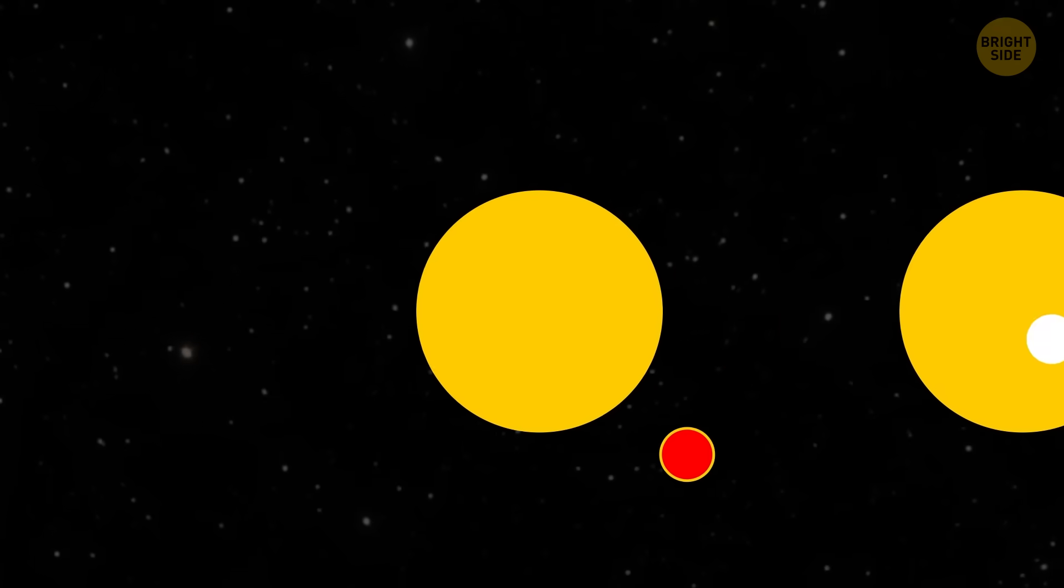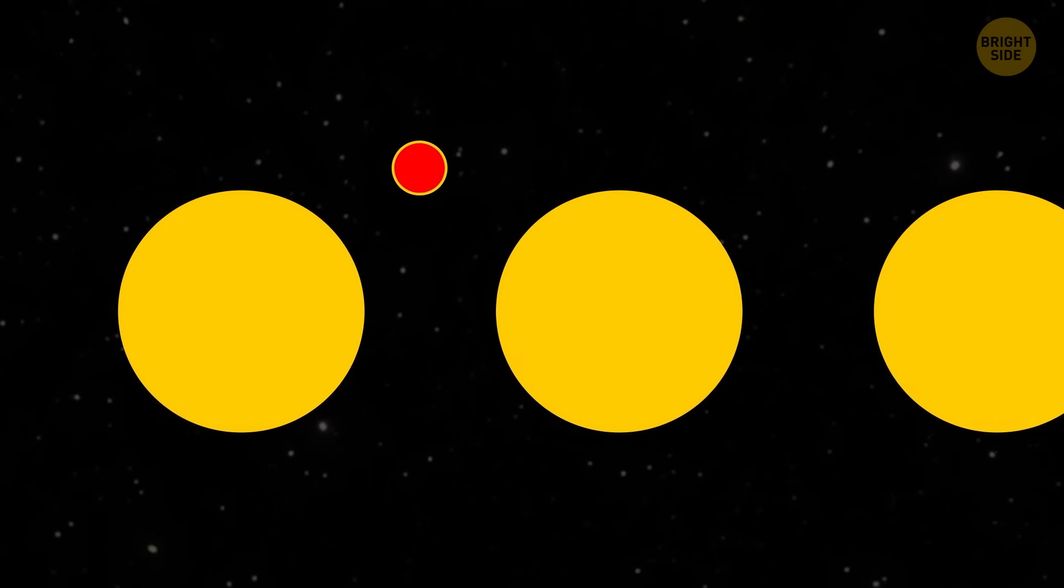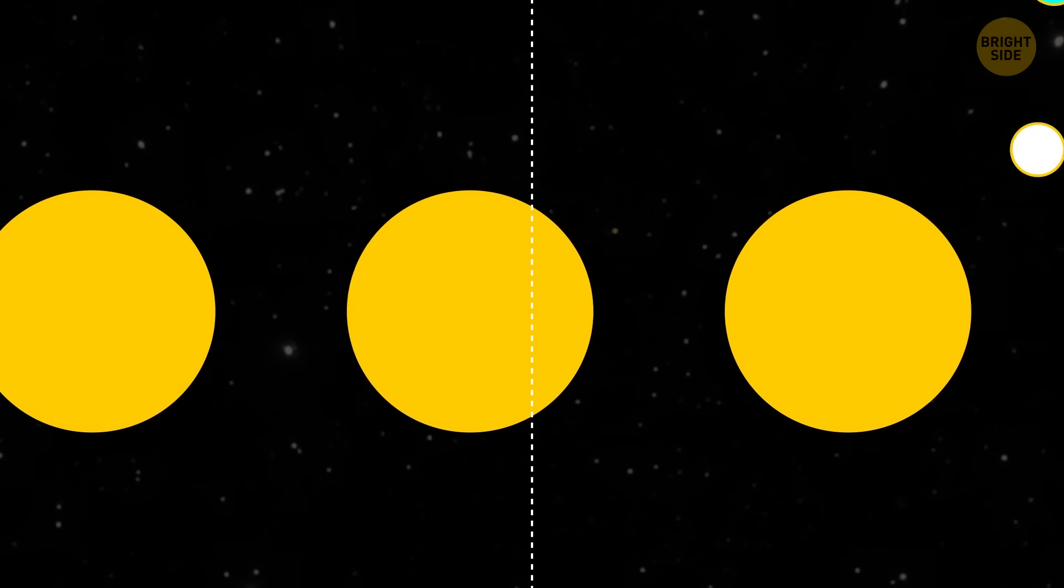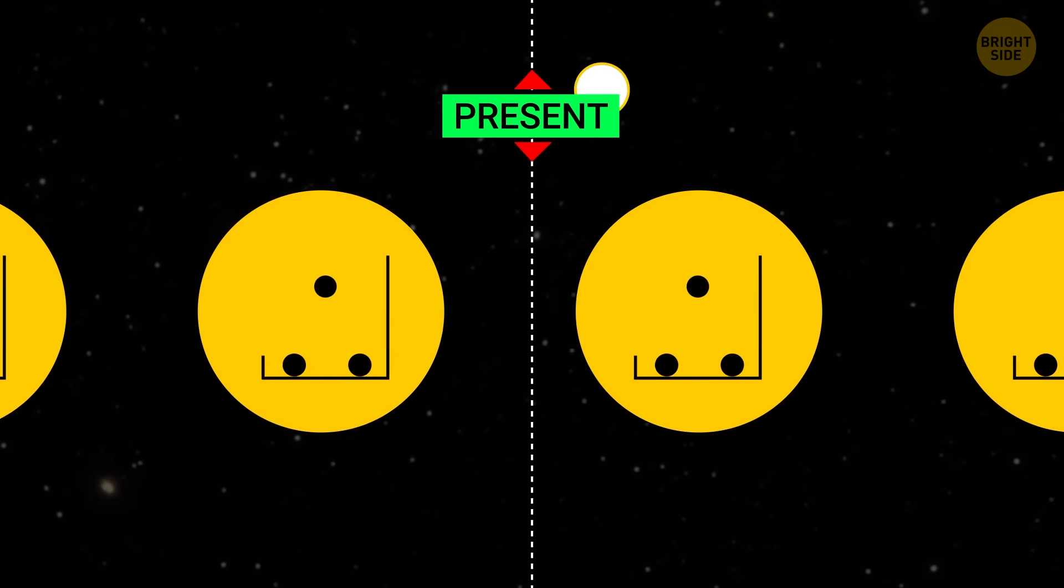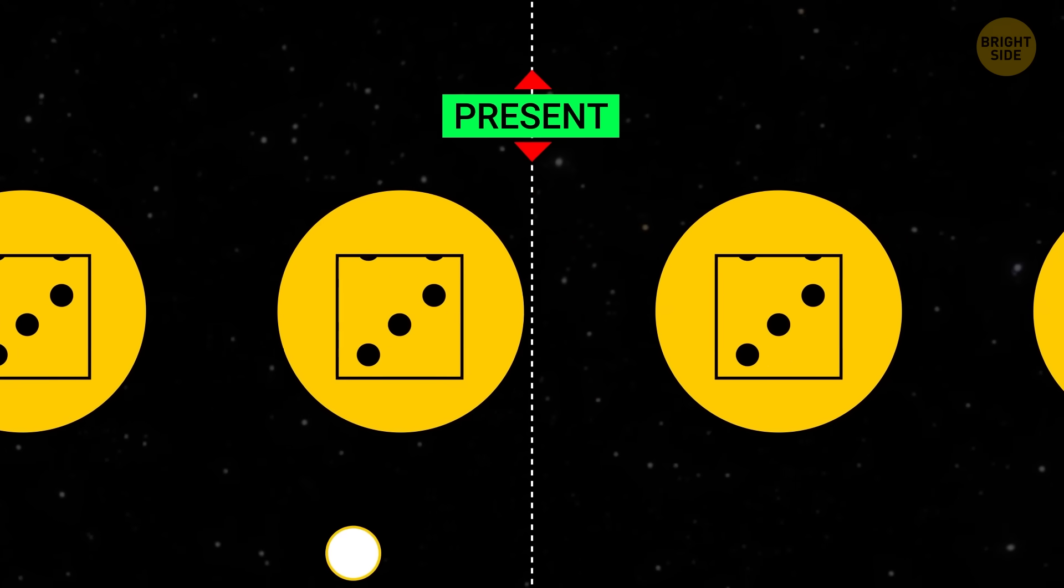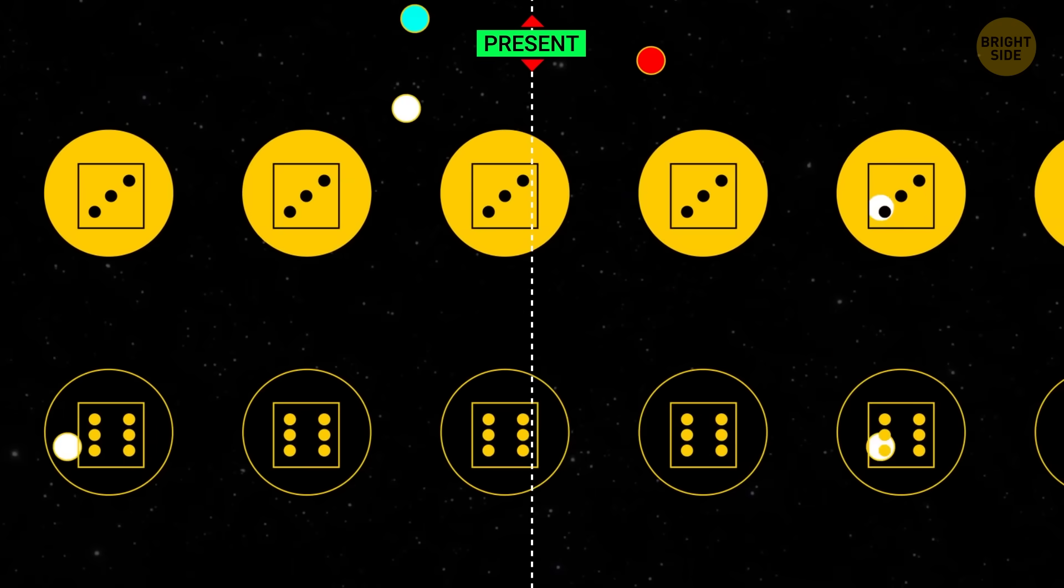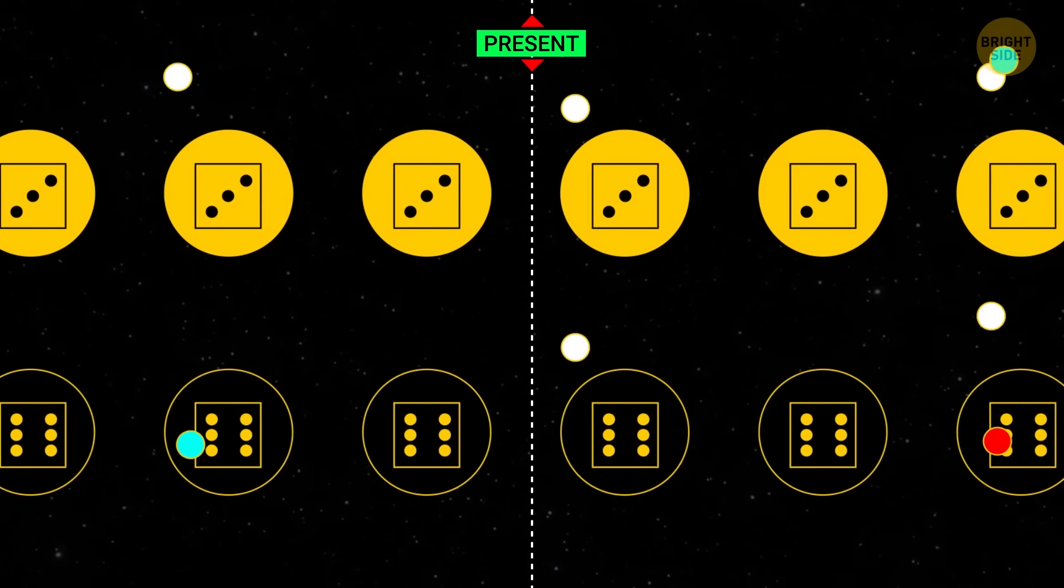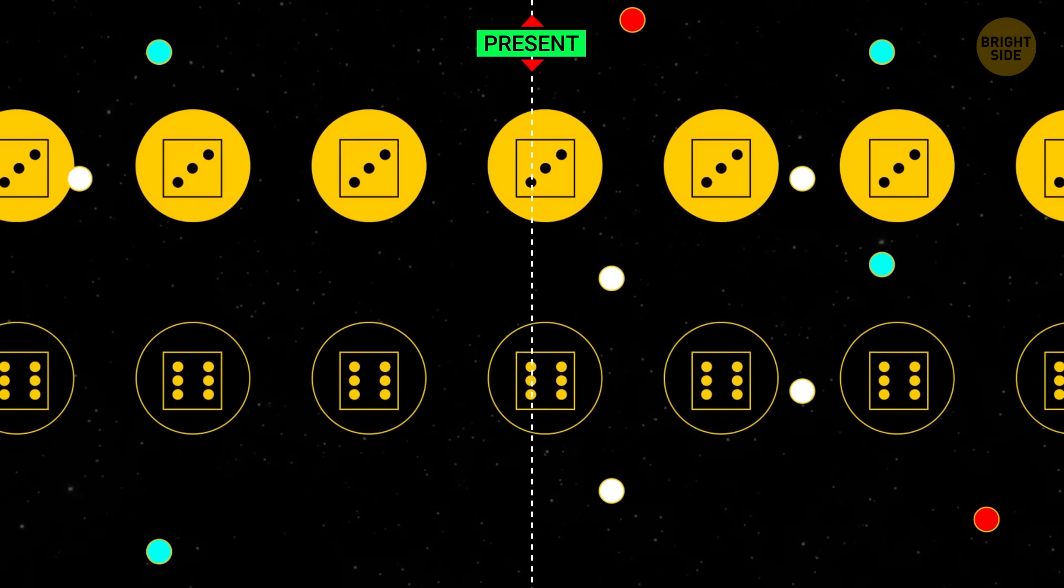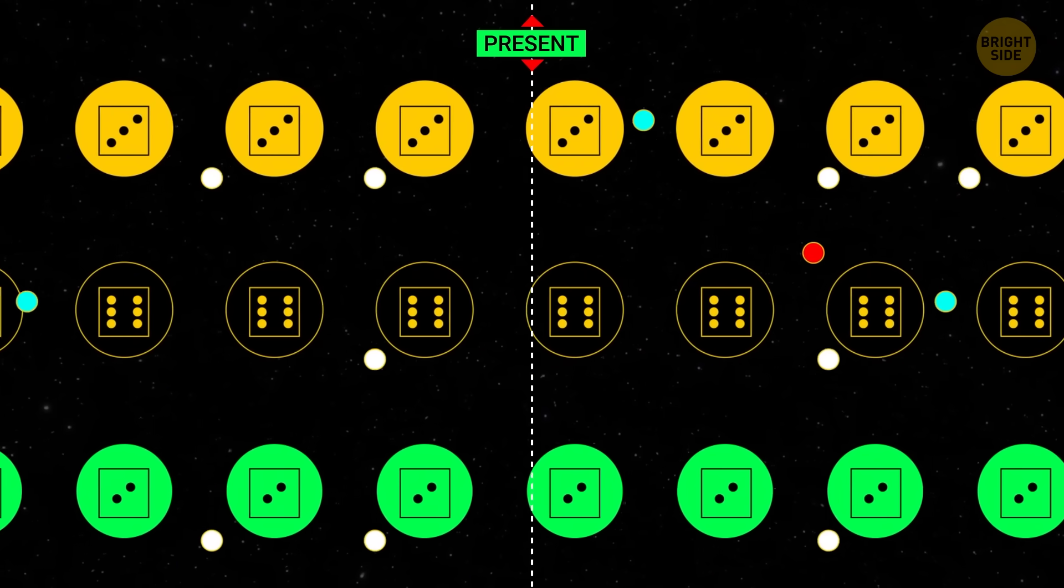Level three is the many worlds interpretation of quantum mechanics. This one's a bit tricky. In the quantum world, things can be weird. Imagine rolling a dice. Each number that comes up might create a separate universe. So if you rolled a dice and got a three, in another universe, it would be a six, and so on. Yeah, my head's spinning. This idea suggests that every possible outcome in quantum events creates a whole new universe.